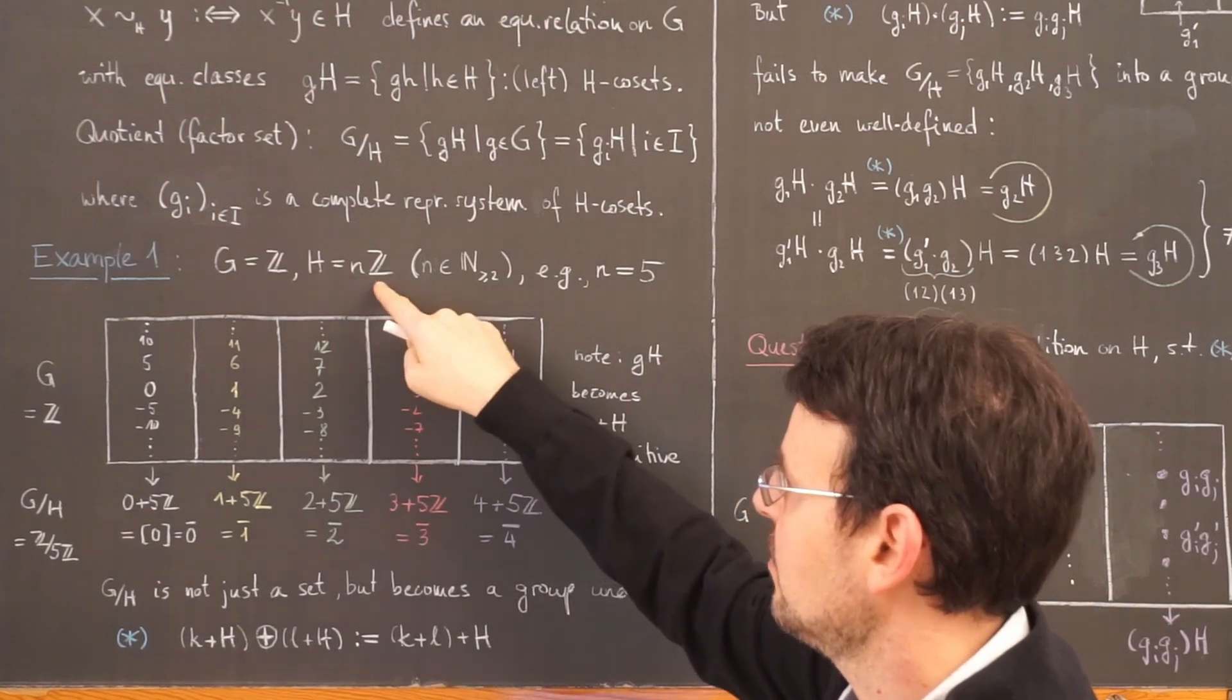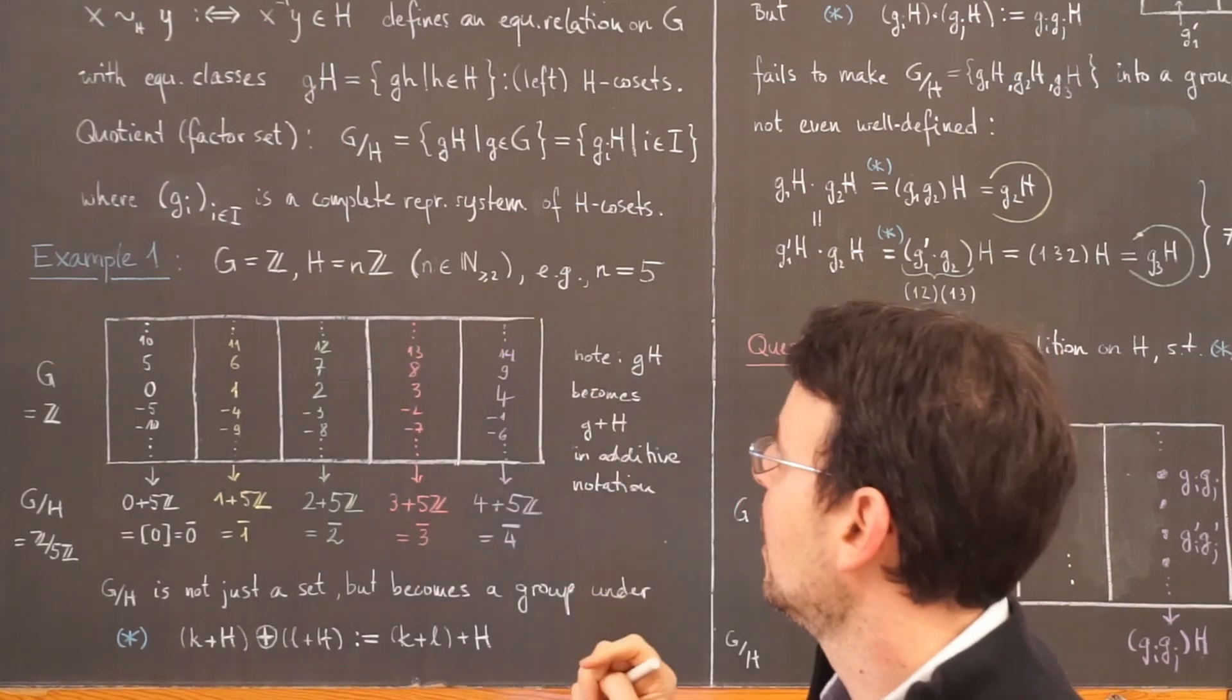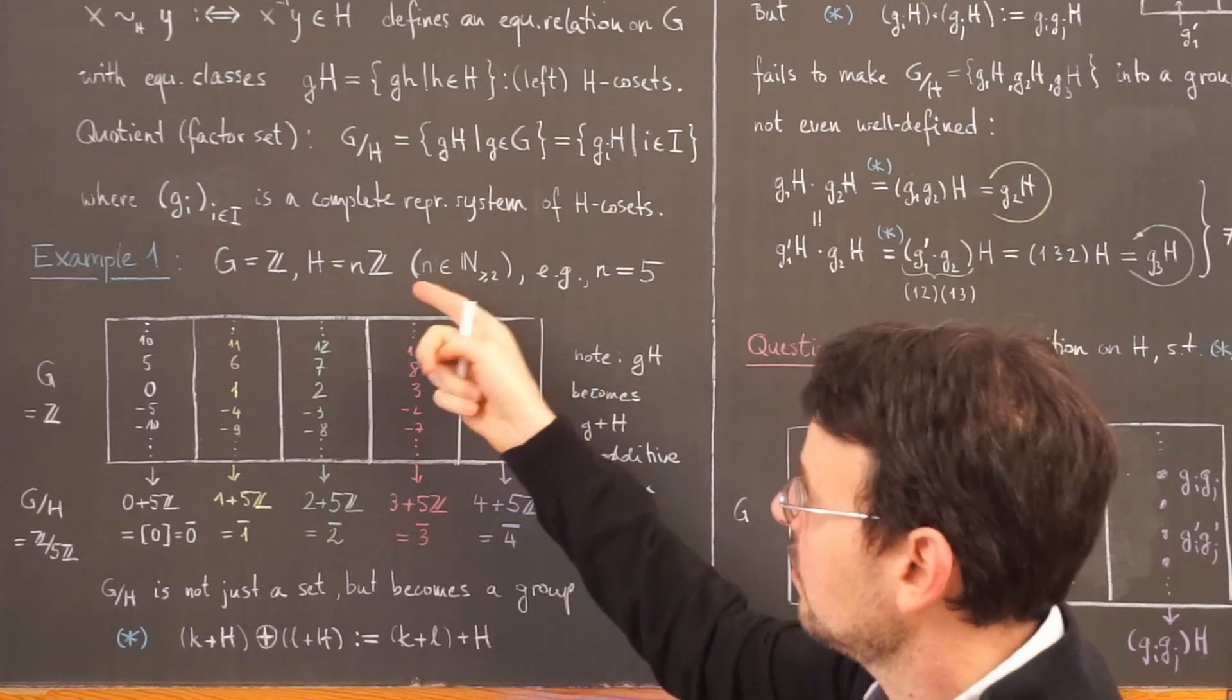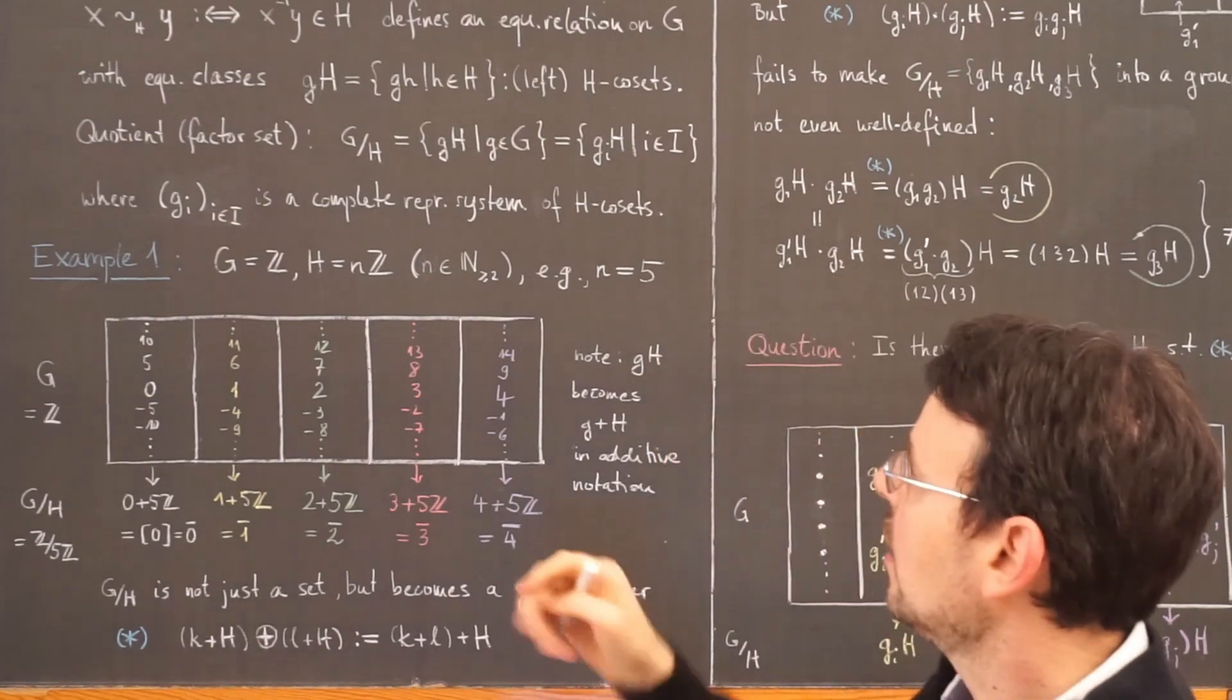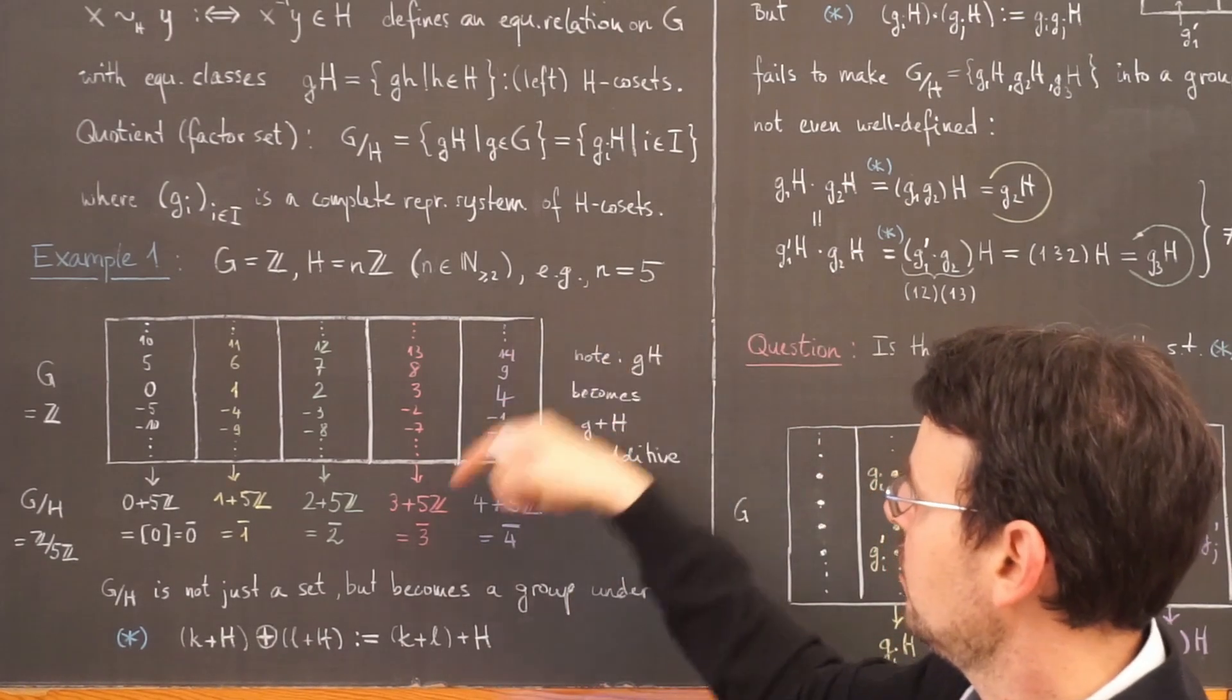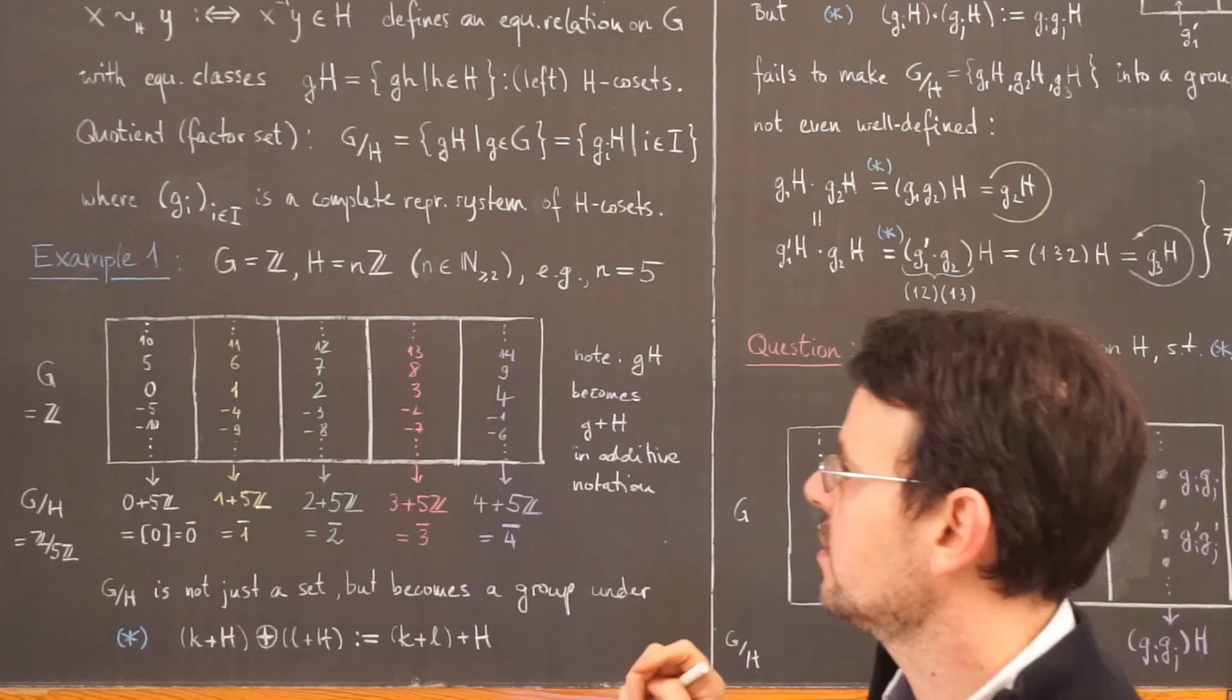And as a subgroup, we take n times the integers, n being any natural number. To avoid the trivial case, we start with 2. And to get even more concrete, we consider the case n equals 5.